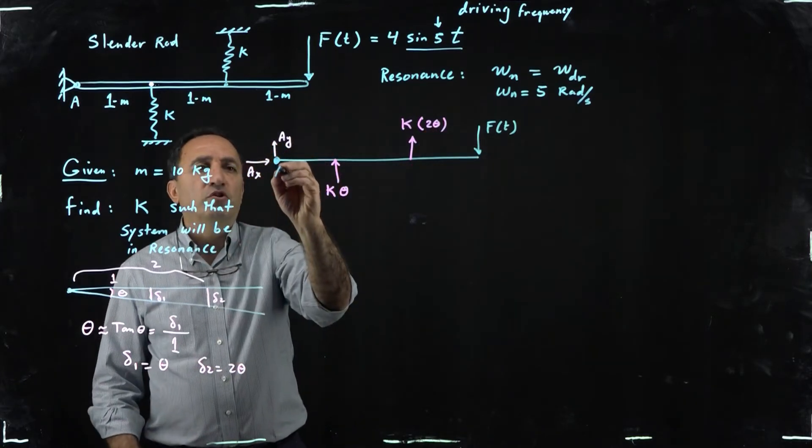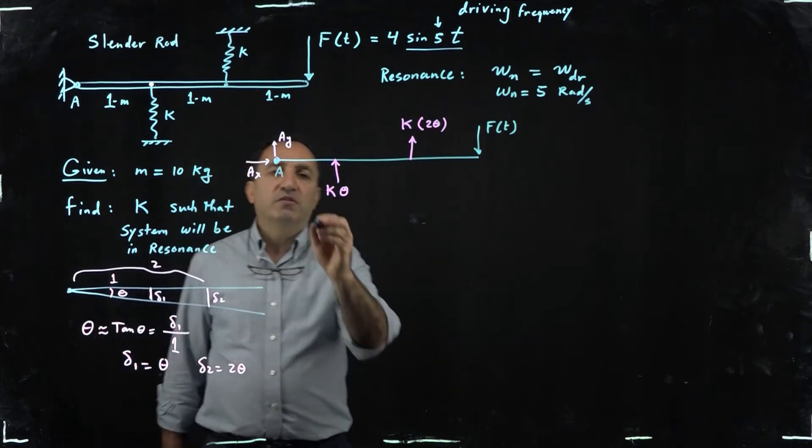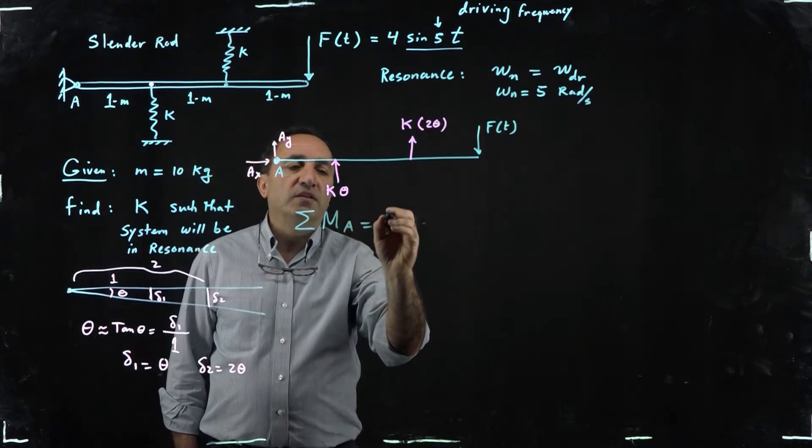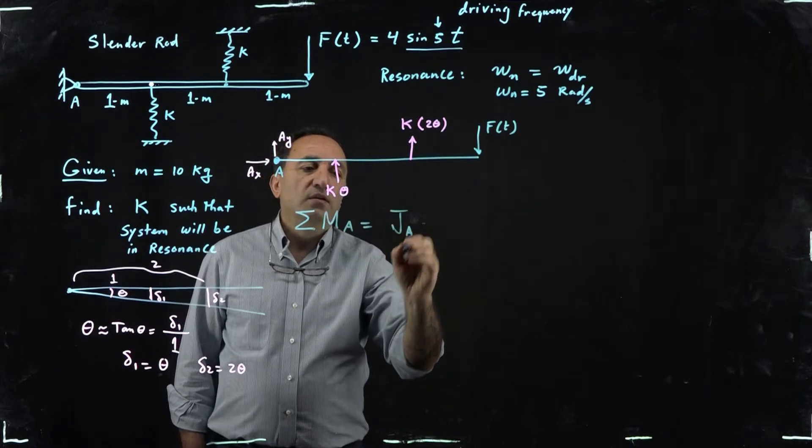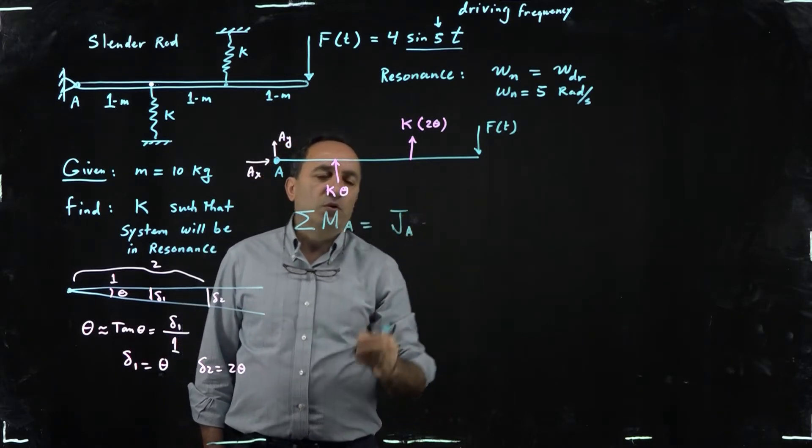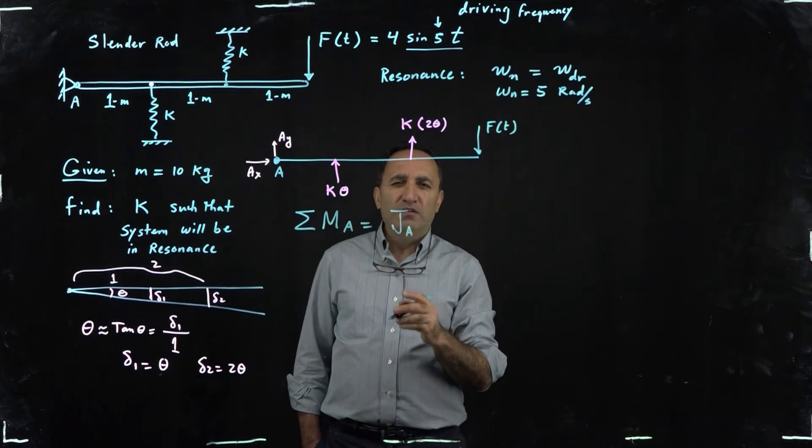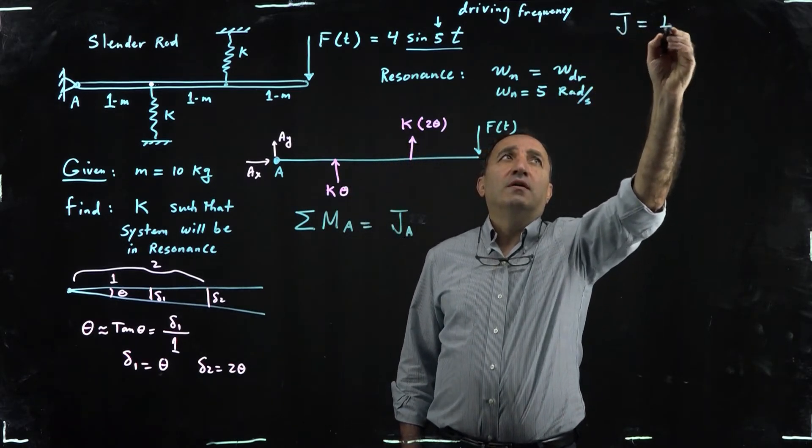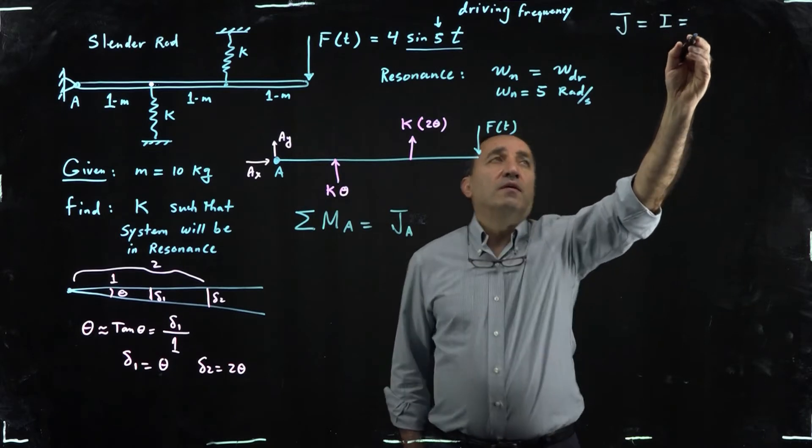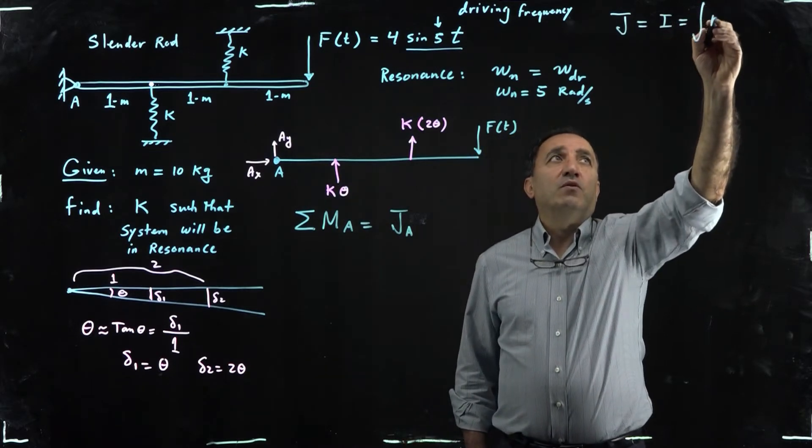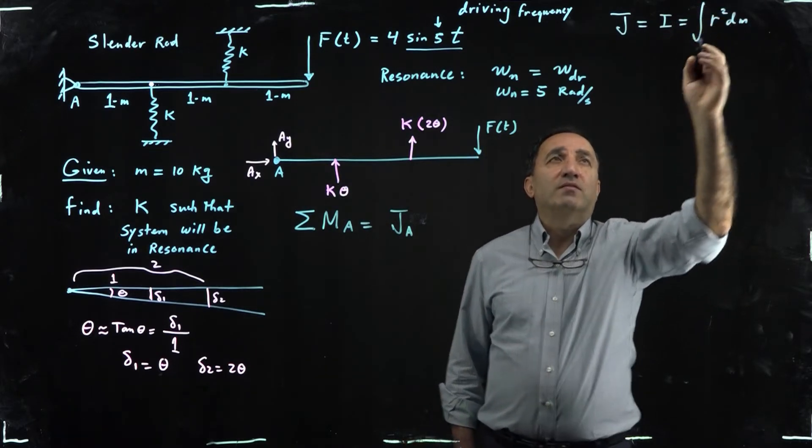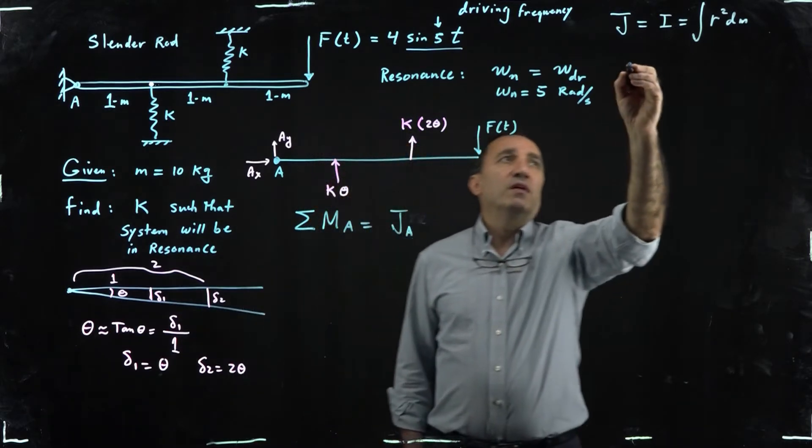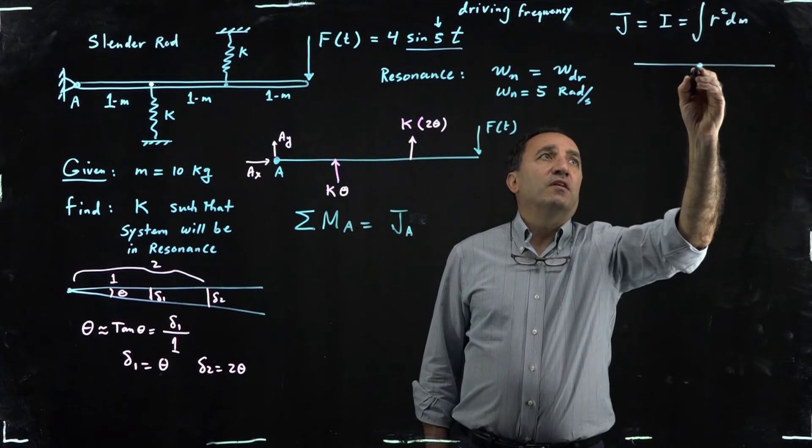So we are ready now to apply the equation of motion. Remember, this is a rotational system. For rotational system we have to take moment about the pivot point and set that equal to J sub A. In this case, by the way, in the notation J here is the mass momentum inertia, the same as I by the way, which is the integral of r squared with respect to mass.